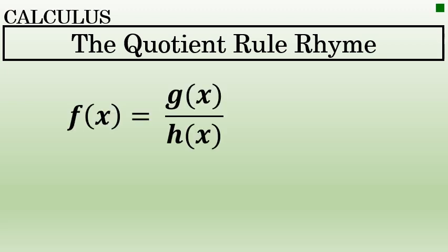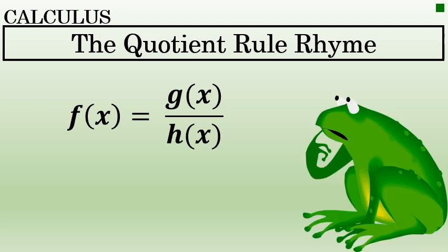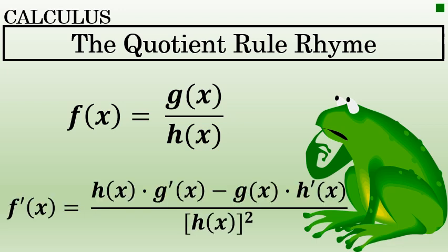To find the derivative of a quotient, such as f of x equals g of x over h of x, the quotient rule must be used. The quotient rule states that the derivative of a fraction of the form f of x equals g of x over h of x is h of x times the derivative of g of x minus g of x times the derivative of h of x, all over h of x squared.